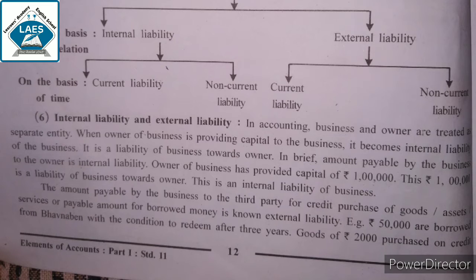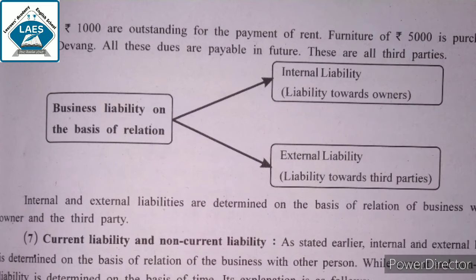The amount payable by the business to the third party for credit purchase of goods, assets, service, or payable amount for borrowed money is known as external liability. For an example: rupees 50,000 are borrowed from Bhavna Bank with the condition to redeem after three years. Goods of rupees 2,000 purchased on credit from Brahman. Rupees 1,000 are outstanding for the payment of rent. Furniture of rupees 5,000 is purchased on credit from Devang. All these dues are payable in future. These are all third parties.